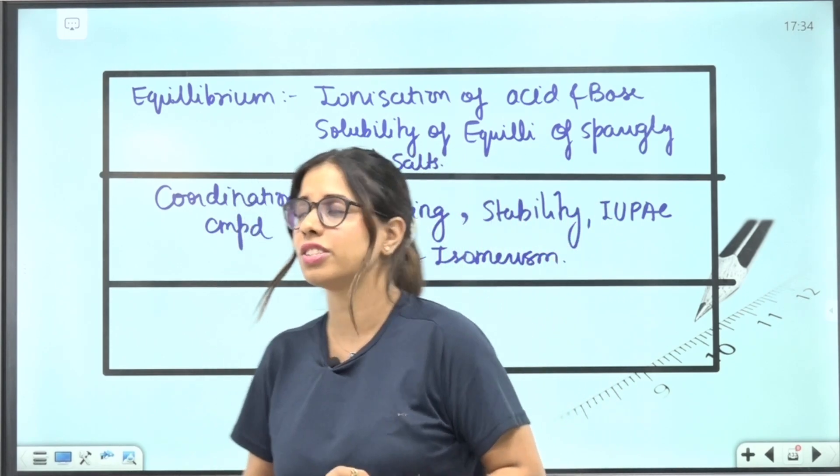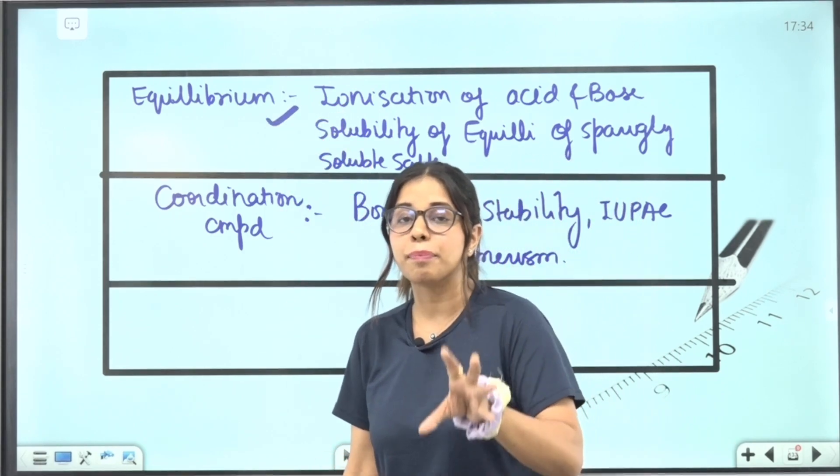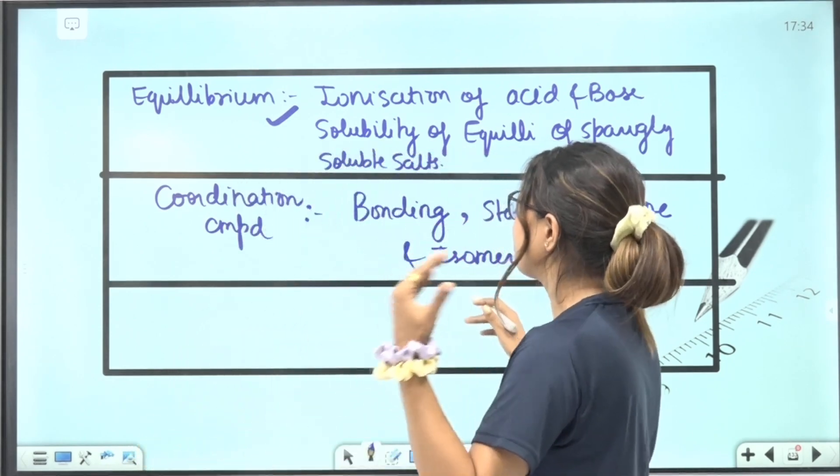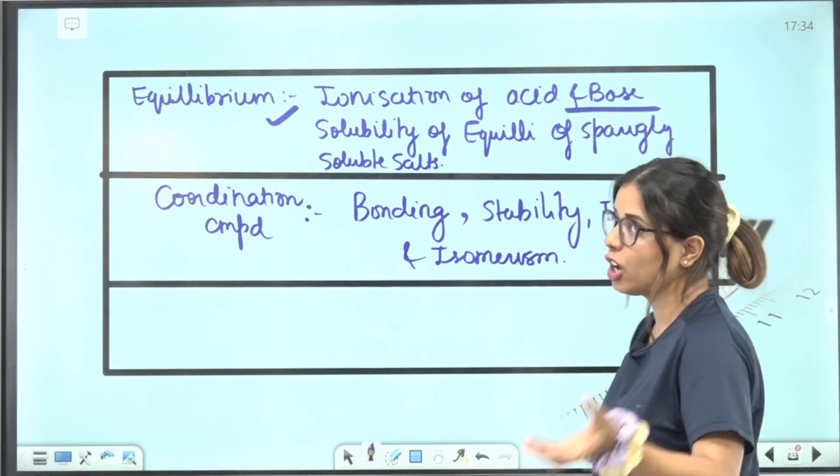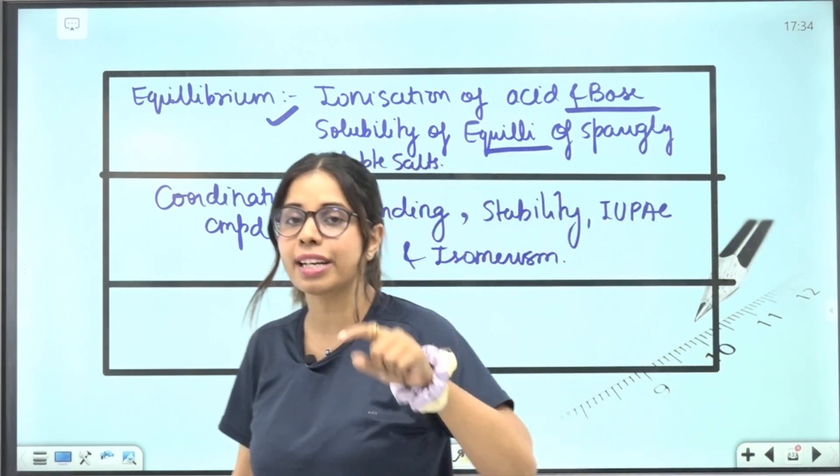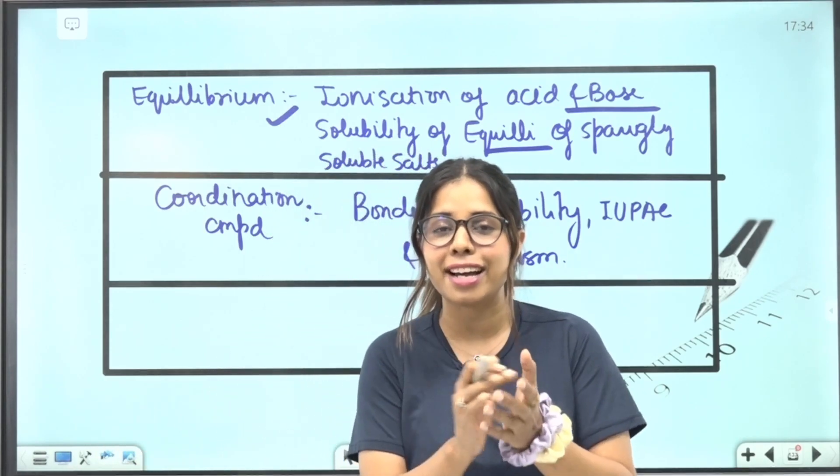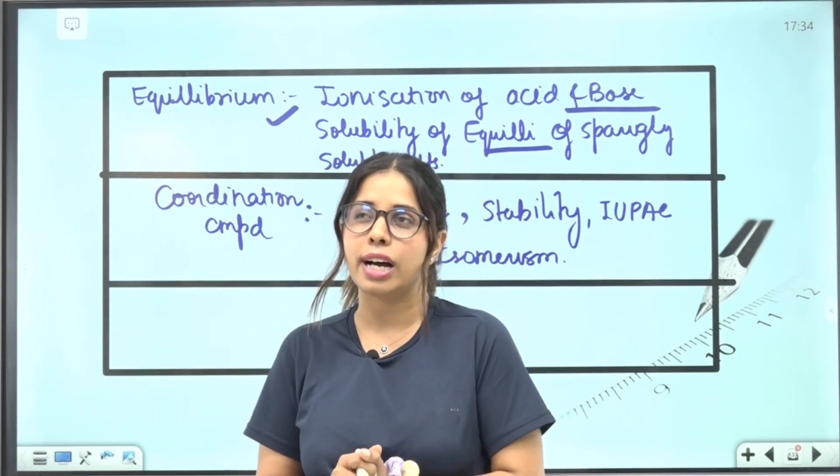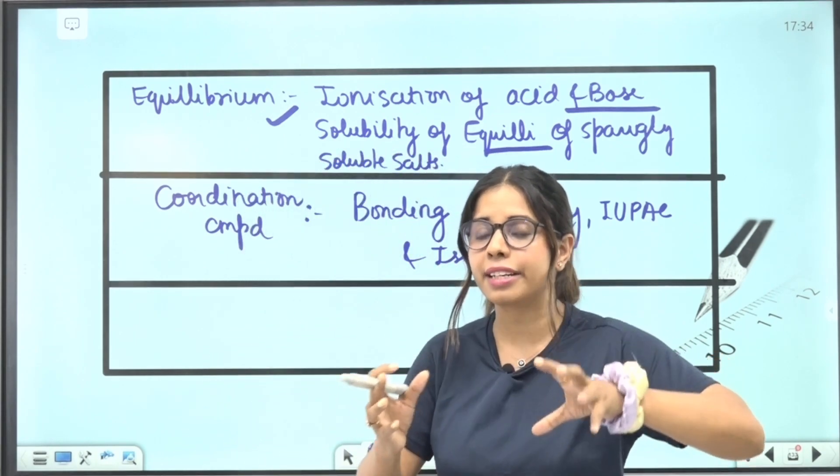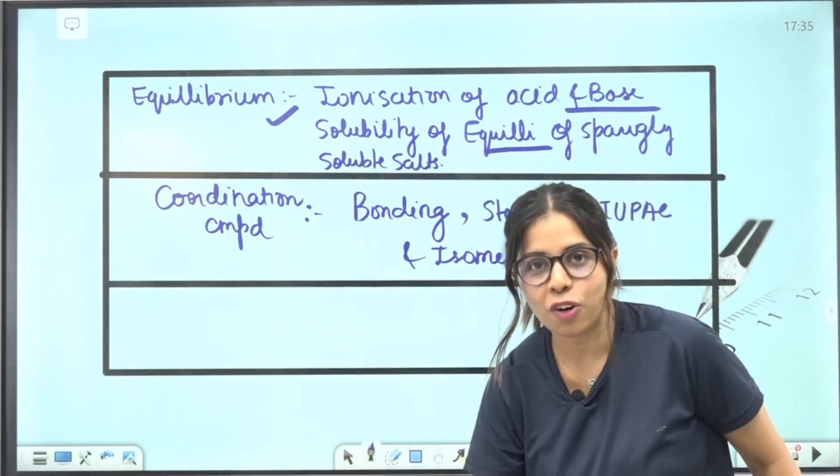When you take the Equilibrium chapter, you have weak acid and weak base, ionization constant, hydrolysis, and how to calculate pH—that segment you have to study very well. Above that, solubility, solubility product, and solubility of salts which are sparingly soluble. This last segment, where ionic product and solubility product are mentioned, you have to do the related questions very well. Considering all the topics, these are 100% going to give you one question in examination.